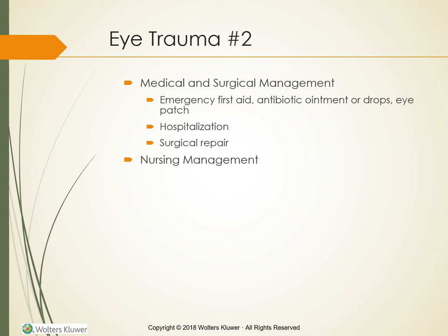Two types of ocular trauma require quick response: chemical burns and foreign objects in the eye. Chemical burns require irrigation with tap water or normal saline. Foreign bodies should not be removed if penetrating; the eye should be protected with a metal eye shield or stiff paper cup following traumatic injury until treatment is initiated by a qualified physician. After emergency first aid, the eye is anesthetized to ease examination. Antibiotic ointment or drops are instilled and the eye may be patched. Clients with blunt trauma are hospitalized to reduce danger of intraocular complications. To repair an eyelid laceration, the physician injects local anesthetic and approximates the lid margins with sutures. A cut on the eyeball, especially the cornea, is serious and requires immediate treatment; surgery is performed if internal eye structures are damaged.